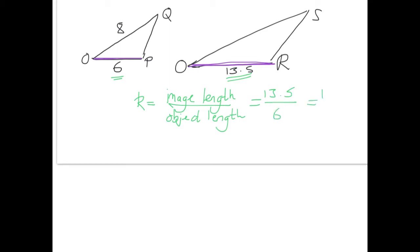We know our image length is 13.5 and our object length is 6. So what that is, is the length of OR divided by the length of OP. And what that is equal to, when we work that out on a calculator, is 2.25. So that is our answer for our scale factor K.